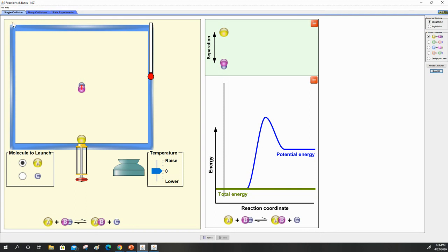Okay, in this first simulation we're going to look at a single collision. You can see we have reactant A and reactant BC, and we're trying to find out if there's going to be an effective collision. On this side we have our energy diagram, and we're going to pay attention to it to see the amount of energy.